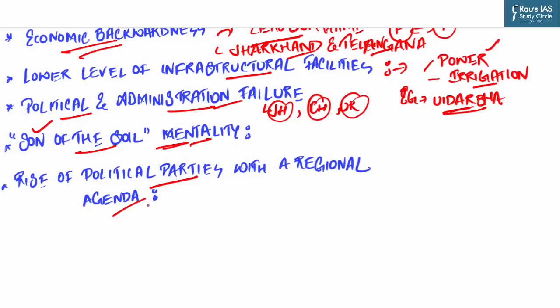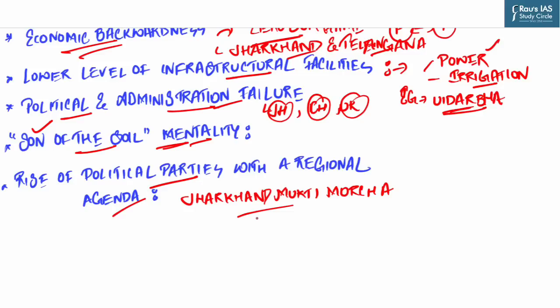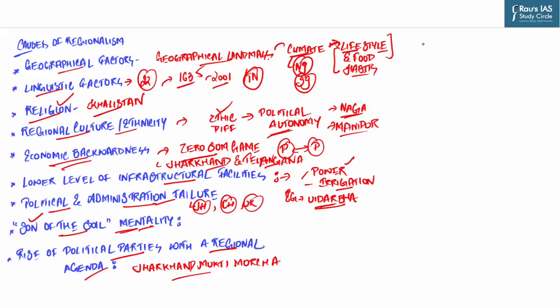Another cause is the rise of political parties with a regional agenda. Regional forces aimed at securing the interest of a region and promoting minority interests further give impetus to the idea of regionalism. For example, the Jharkhand Mukti Morcha and SAD belong to this category of regional political parties. These causes create the emotional field for regionalism and have far-reaching impacts on the unity of our country.